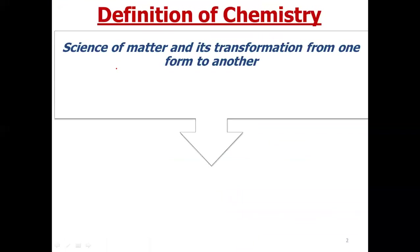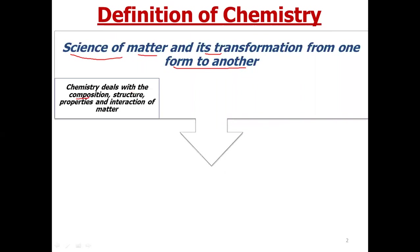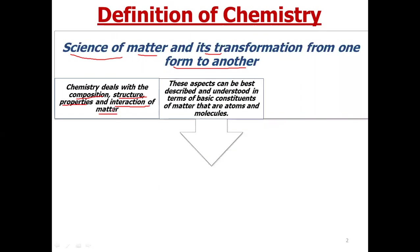If we have to define chemistry, then in simple words we can say chemistry is the science of matter and its transformation from one form to another. Chemistry deals with the composition, structure, properties, and interaction of matter, and to understand these aspects we have to understand the basic constituents of matter, which are atoms and molecules.